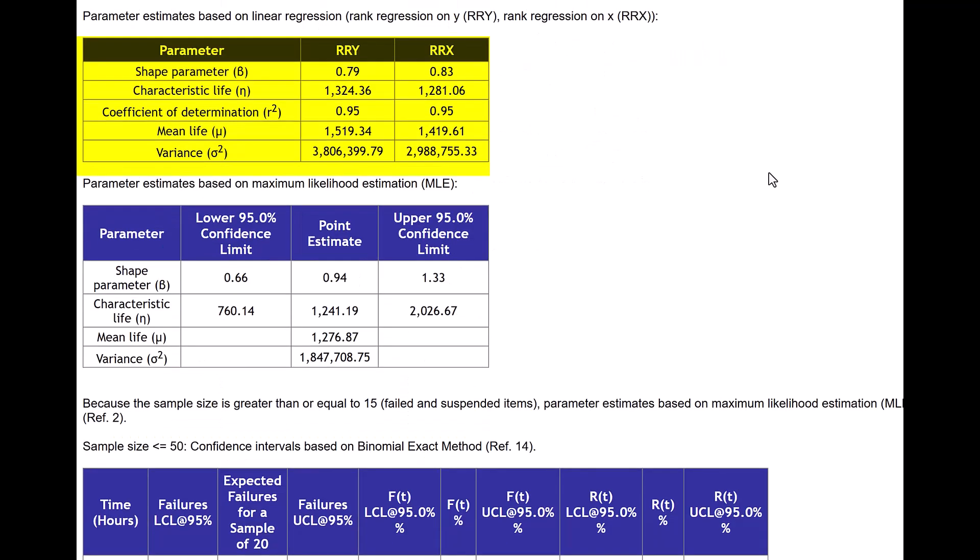And below that you will see the parameter estimates. We had chosen RRx method to estimate parameters in the options. The beta parameter with RRx is 0.83, whereas if we had chosen RRy it would have been 0.79, which is a small difference and we shouldn't worry too much about this small difference.